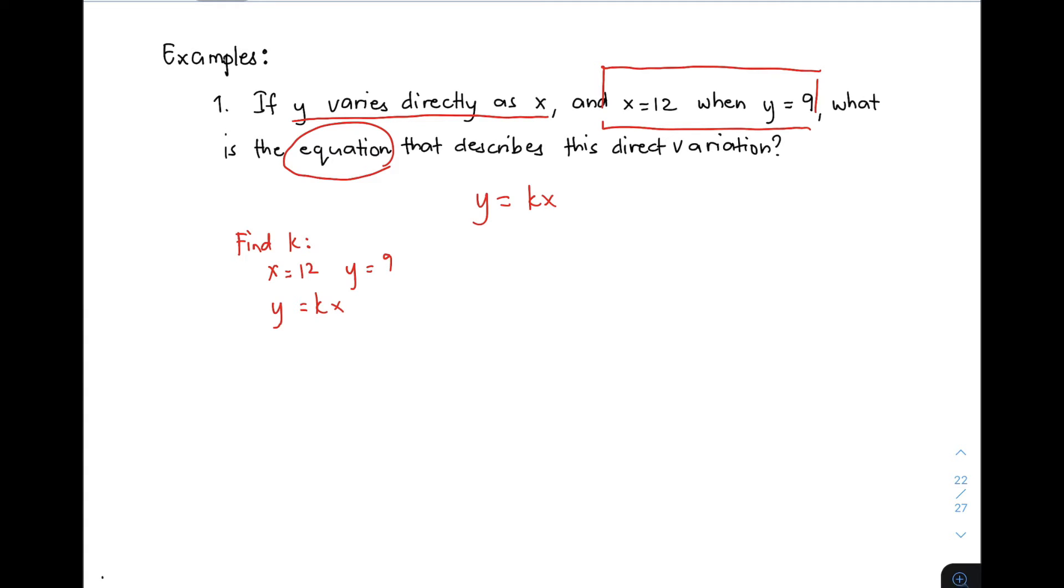You have 9 is equal to K times 12, which is 9 equals 12K. To find K, we divide both sides by 12. Simplifying, K is equal to 3 over 4. This is the value of K, but we're not yet done.